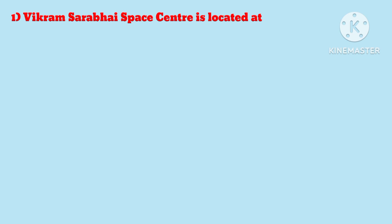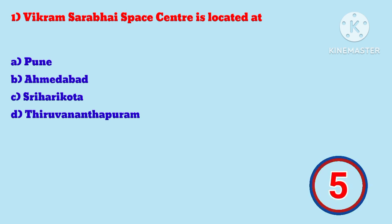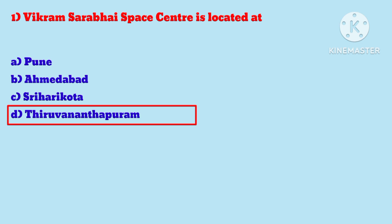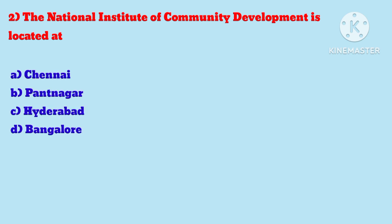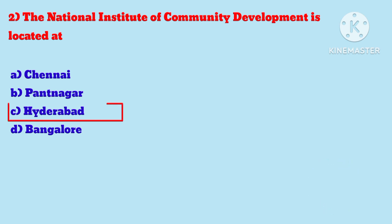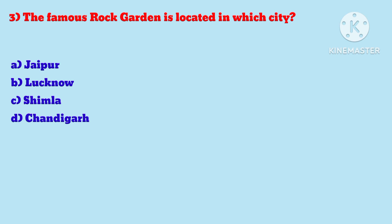Question 1: Vikram Sarabhai Space Center is located at — Answer is Thiruvananthapuram. Question 2: The National Institute of Community Development is located at — Answer is Hyderabad. Question 3: The famous Rock Garden is located in which city? — Answer is Chandigarh.